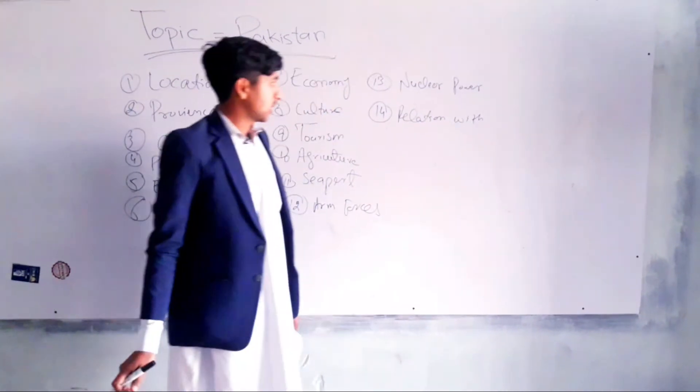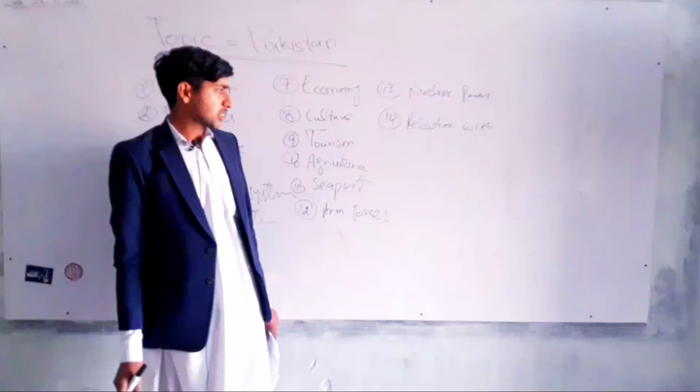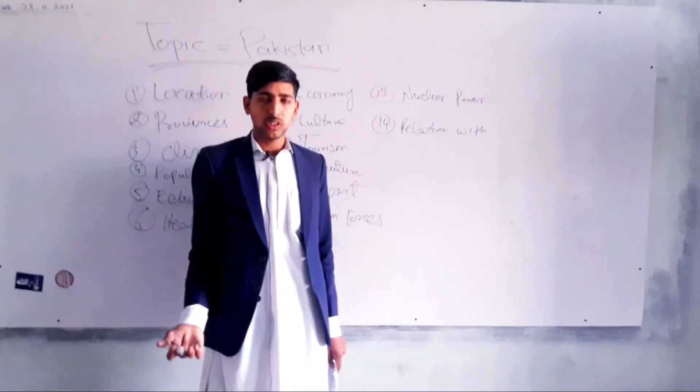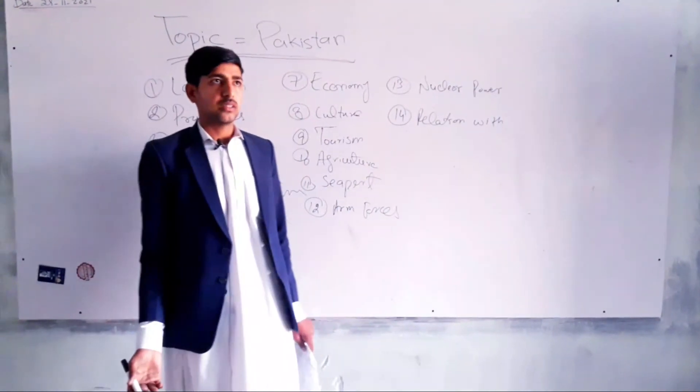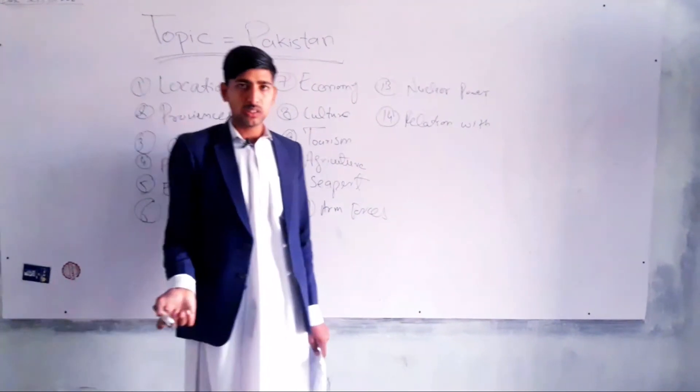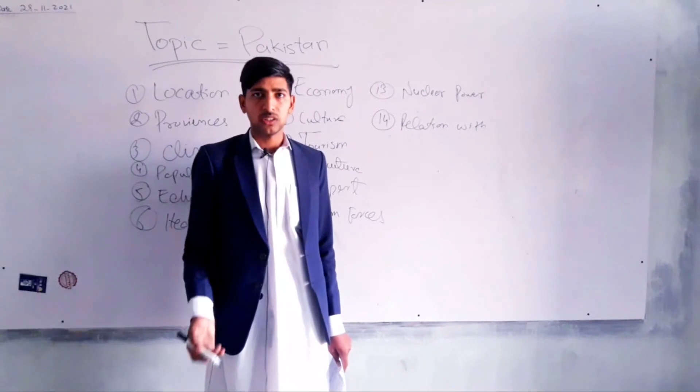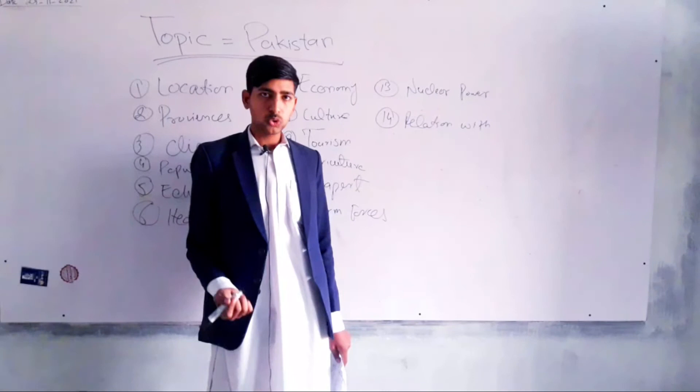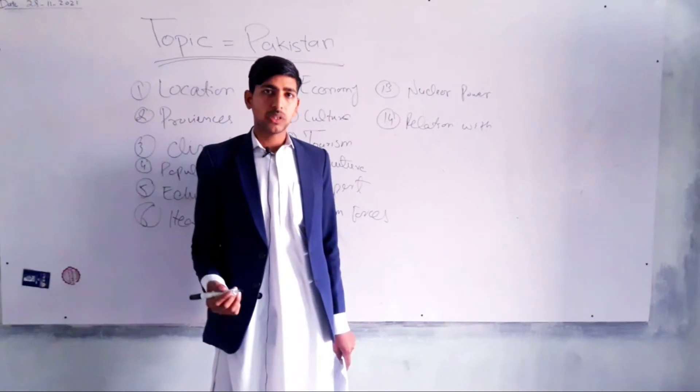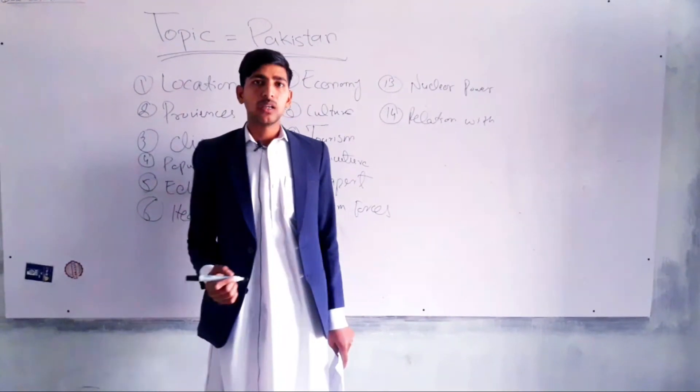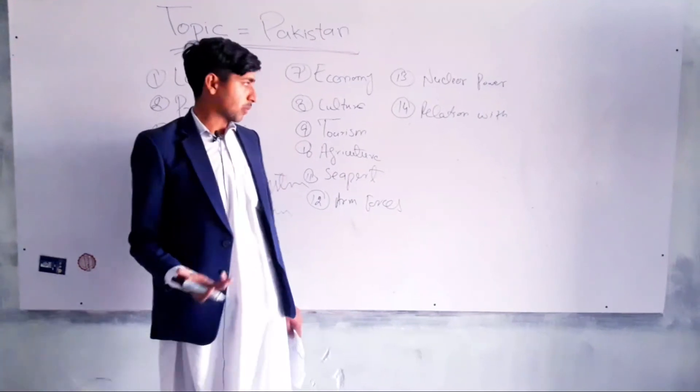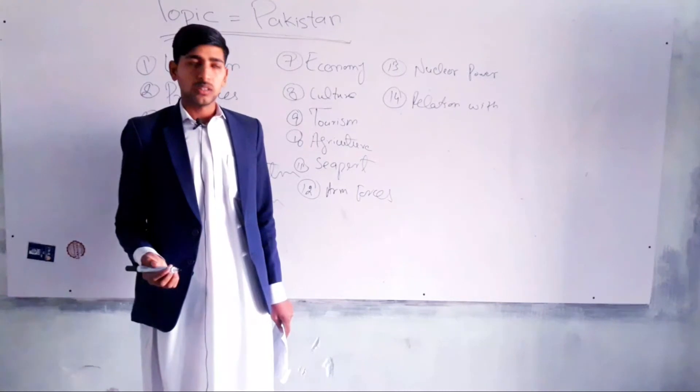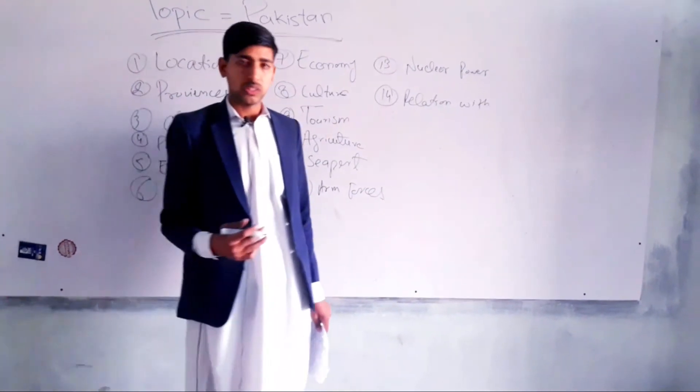Number 14 is relations with other countries. Pakistan wants good relations in the region. We have good relations with Turkey, Iran, and China, because JF-17 Thunder was made by Pakistan and China jointly. But we have no good relations with India because of the Kashmir issue, and no good relations with Afghanistan because many countries attack Pakistan from the Afghan border. When the Taliban took over, we wanted good relations with them.